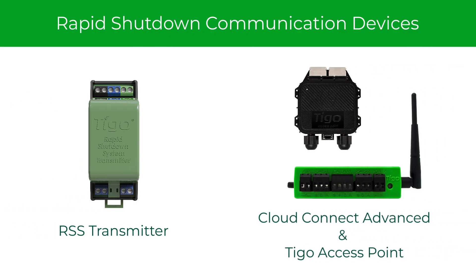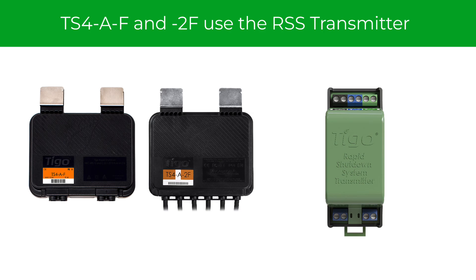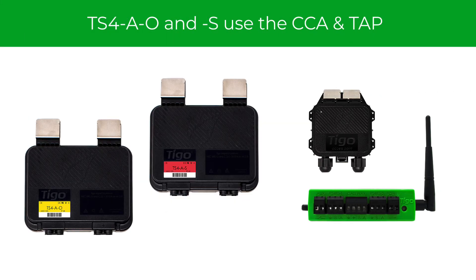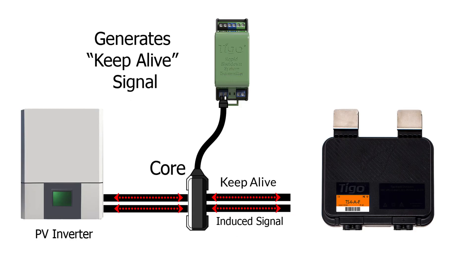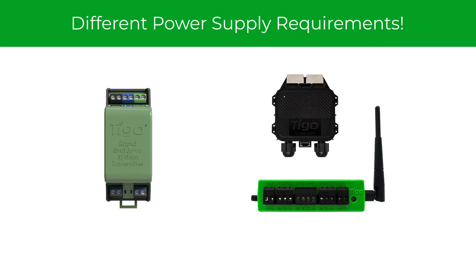However, the communication methods to trigger rapid shutdown vary between the TS4 models and may be incompatible with some PV inverter manufacturers. The TS4-F and 2F require the RSS transmitter, and the TS4-ONS requires the CloudConnect Advanced and Tigo access point. The RSS transmitter uses power line communication to initiate rapid shutdown, but the CCA and TAP use wireless signals. Both of these communication methods have different voltage and current requirements.